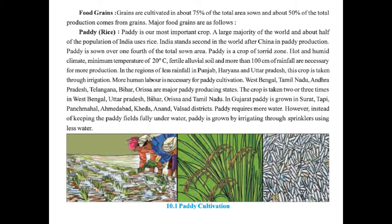First we will take paddy, which means rice. Paddy is our most important crop and its production is an important part of the national economy. A large majority of the world and about half of the population of India uses rice. India stands second in the world after China in paddy production. Paddy is sown over one fourth of total sown area and is a crop of the tropic zone.